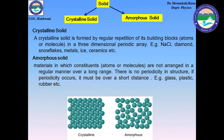We can divide solids into two parts: crystalline solid and amorphous solid. In case of crystalline solid, there is a regular repetition of atoms or molecules in a three-dimensional periodic array. The examples of crystalline solids are sodium chloride, diamond, snowflakes, metals, ice, ceramics, etc.